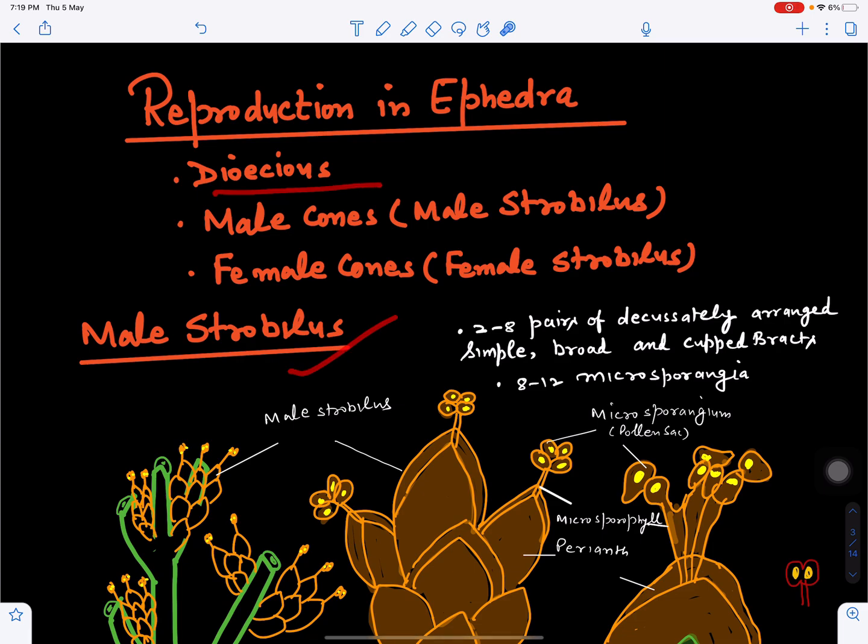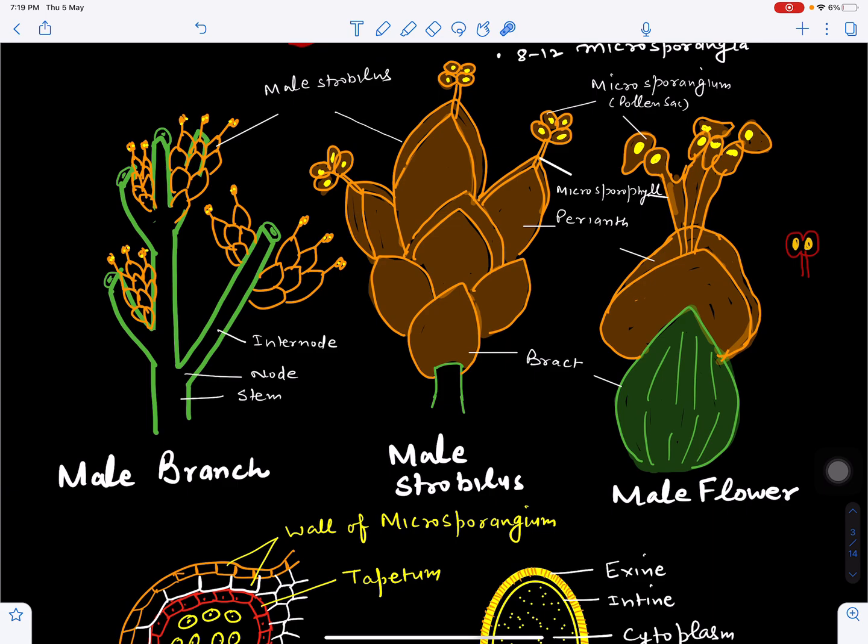The male strobilus is borne on the node of the Ephedra plant. At the node are present scale leaves. In the axil of scale leaves, the male cone arises. Each male cone is a complex or compound structure.